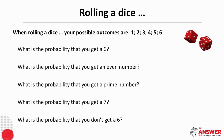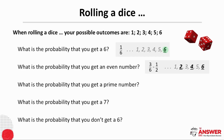Now let's consider a couple of questions regarding the rolling of a dice. What is the probability that you get a six? There are six possible outcomes when rolling a dice, and so the chances are one in six of rolling a six, so the probability is a sixth. What is the probability that you get an even number? There are three possible outcomes: a two, a four, or a six, which means there is a three in six chance of rolling an even number, so the probability is three sixths, which simplifies to a half.